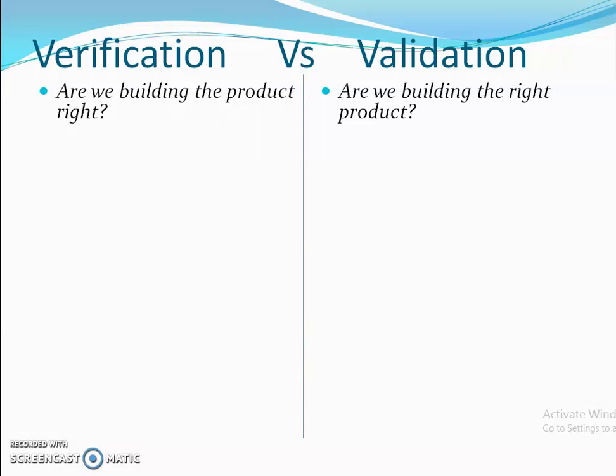The same applies in the software industry. SRS — software requirement specification — is where we get all the details about the software specification. Based on that, developers design everything and also code it. Then the team checks whether all these specifications are reflected in the project or not — that is known as verification. Everything should be implemented in the right way.